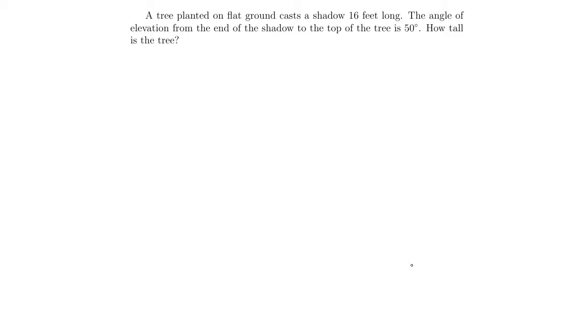A tree planted on flat ground casts a shadow 16 feet long. The angle of elevation from the end of the shadow to the top of the tree is 50 degrees. How tall is the tree?